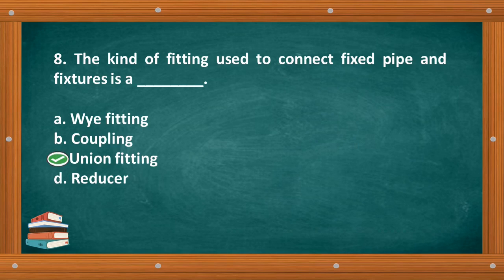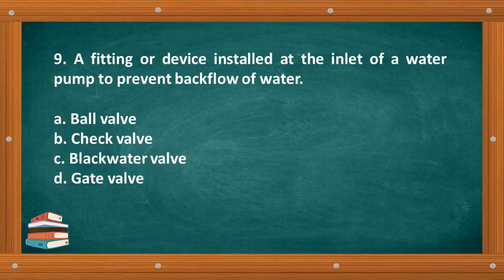The correct answer is letter C, Union fitting. Question number 9: A fitting or device installed at the inlet of a water pump to prevent backflow of water. A. Ball valve, B. Check valve, C. Black water valve, D. Gate valve.